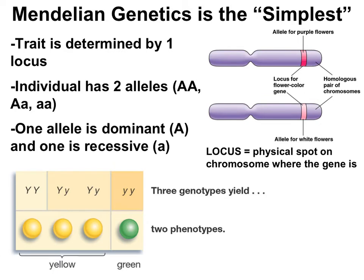What scientists were finding, though, is that there were a lot of situations that weren't exactly lining up with Mendel's model. So scientists did what scientists do, and they came up with new models to see if the data they were observing fit those models.